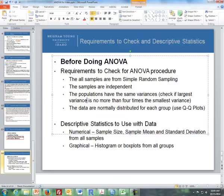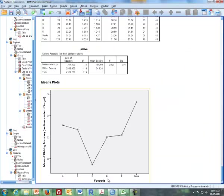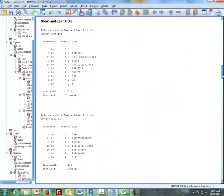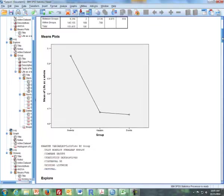The third and fourth items, we can check with data. The populations have the same variances. We can check if the largest variance is no more than four times the smallest variance. And the data are normally distributed for each group, so we can use QQ plots. I'm going to go to output here, and this output is similar to what you see in Excel, I have this in SPSS.